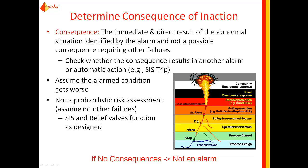We next analyze the potential consequences of inaction, focusing on the direct and immediate result of the abnormal situation, not what could happen after a series of failures. Another way to think about it is: what consequences can the operator prevent directly by taking the appropriate corrective action? This consequence assessment is different from a Process Hazard Analysis, or PHA. In a PHA, one is after the ultimate consequence — what could happen if all layers of protection fail. In alarm rationalization, we are only interested in the direct and immediate consequence of failing to respond to the alarm.